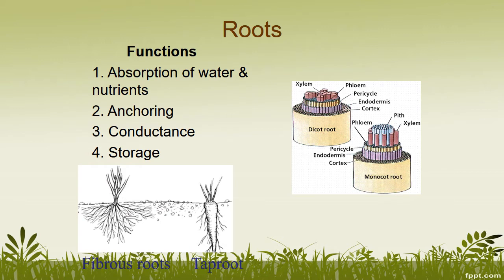Starting at the very bottom with the roots: the functions of roots are to be able to take up water and nutrients. Roots are also used for anchoring the plant into the ground. They're used for conductance, which is moving gases — mostly oxygen — inside of the roots. And then with some plants, they use their roots for storage, to store the extra carbohydrates that the plant has produced for later use.